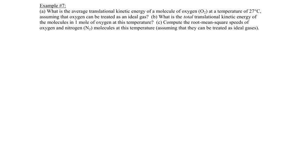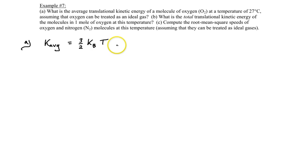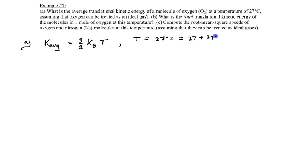In part A, to find the average translational kinetic energy per molecule, we use the formula K_average = (3/2) × k_B × T, where T is temperature in Kelvin. The temperature given is in Celsius, so the first thing we need to do is convert it. To change from Celsius to Kelvin, we add 273, which gives us 300 Kelvin.